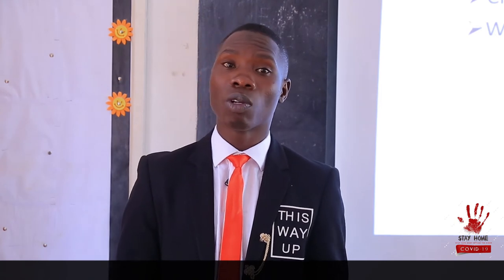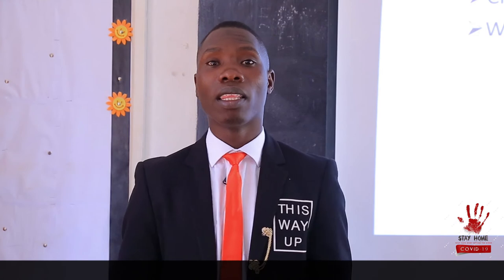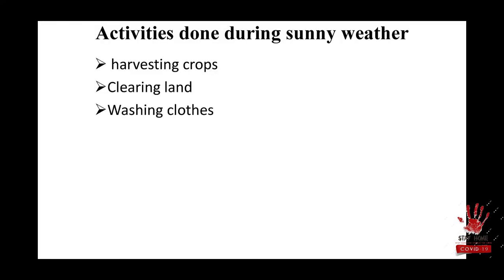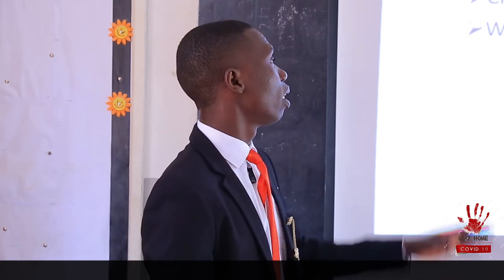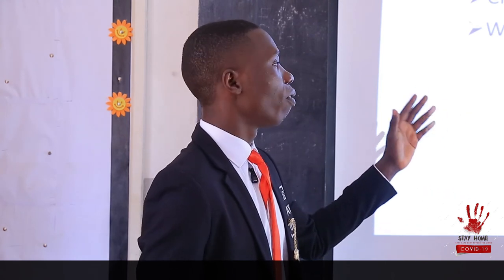When you harvest during rainy season it means these crops are not going to get enough heat to dry, and they will rot. We also have: clearing land. Sunny days are a good time to clear the land so that you wait for rainfall and then plant. We also have washing clothes — we need to wash during sunny weather because we need the clothes to dry in time.